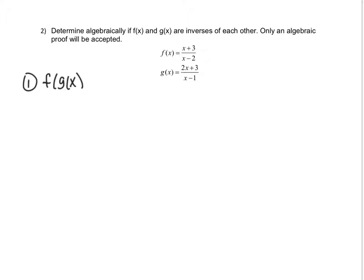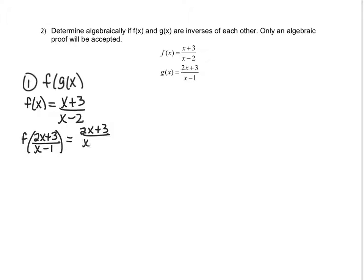So the f of x function, if you want to write it down, is x plus three over x minus two. And I want to substitute g of x, which is two x plus three over x minus one. So everywhere I see an x, I'm going to put two x plus three over x minus one. This took the place of x, so I have to put it in both the numerator and denominator positions — plus three and then minus two.